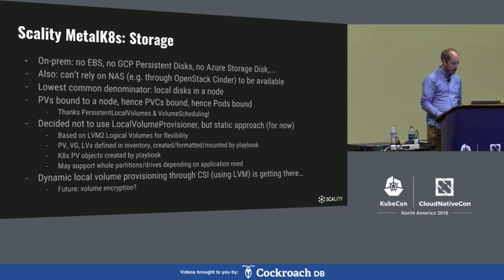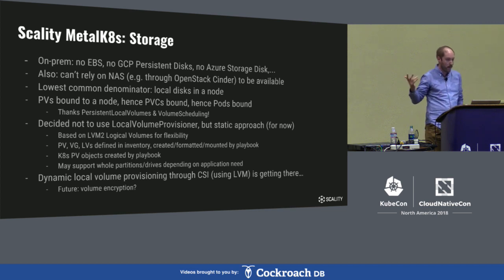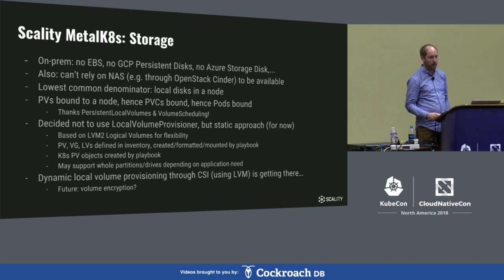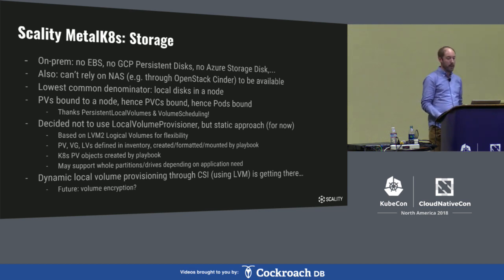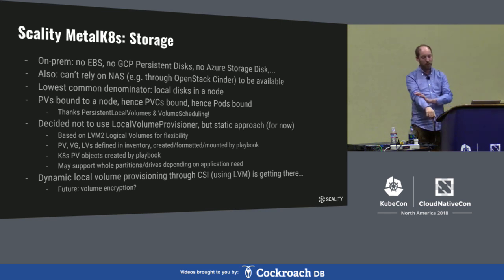Thanks to persistent local volumes and volume scheduling, we can create PVs which are then bound by a PVC and in the end bind the pod to a specific node. We do not use a local volume provisioner, but have a more static approach where as part of the playbook you can specify in your inventory which volumes you want available, which filesystems should be on them, how big they should be, which filesystem options, mount options, and mkfs options should be used. We create all these volumes in the various LVM physical volumes and volume groups you defined, and then create the PV objects in the Kubernetes cluster. We are looking forward to CSI-based dynamic volume provisioning using LVM, but currently that's not done yet.